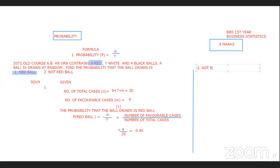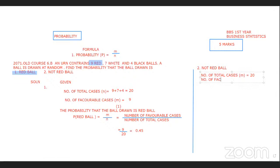Not red ball. So first, the number of total cases — the total is 20. So our number of favorable cases...